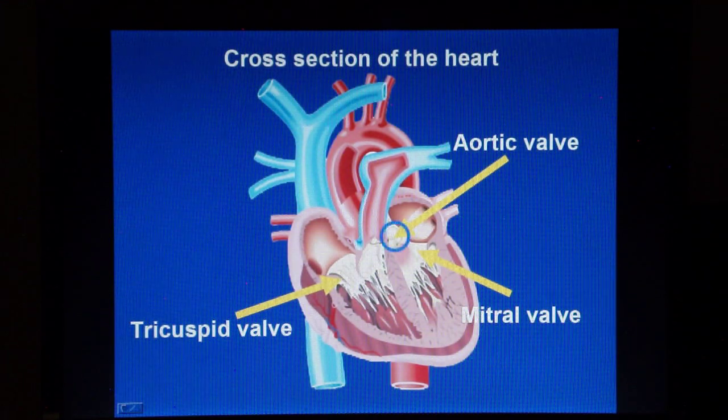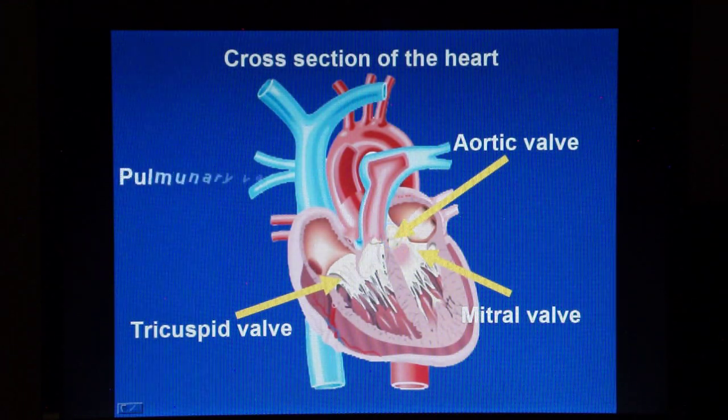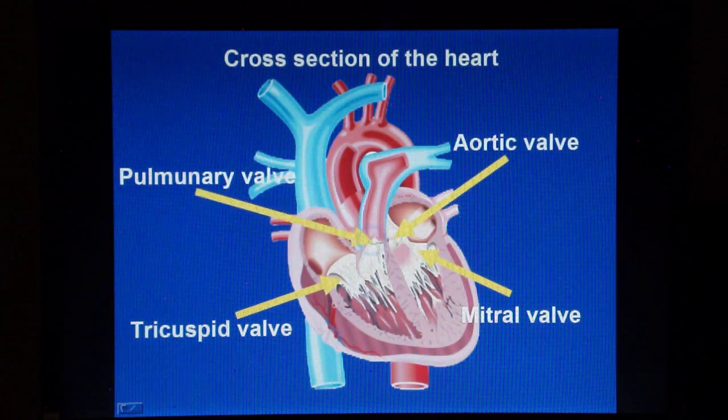The two semilunar valves sit between the left ventricle and the aorta artery and between the right ventricle and the pulmonary artery, respectively.